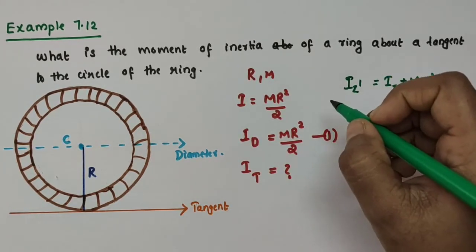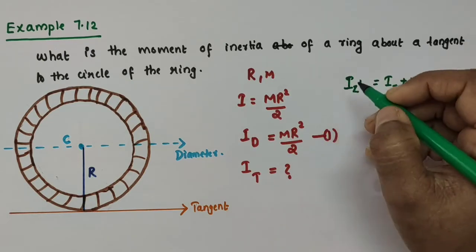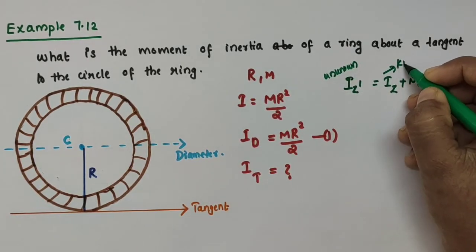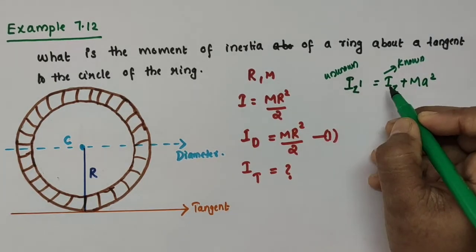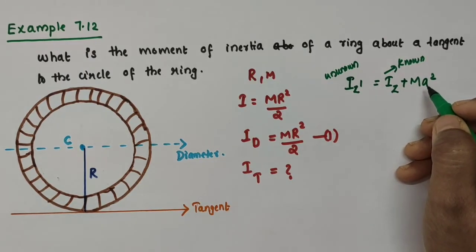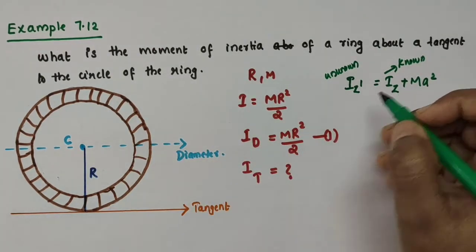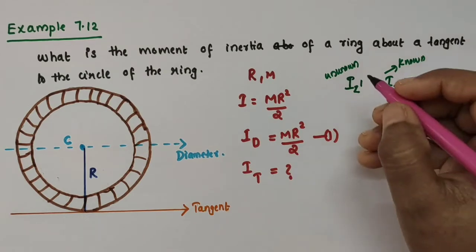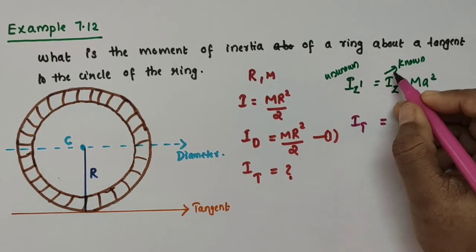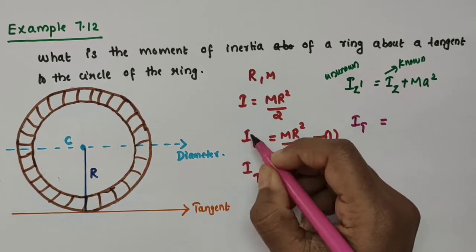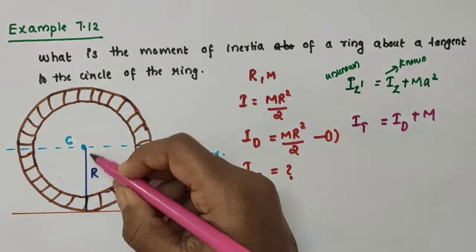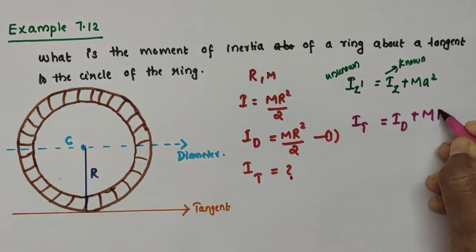Here I_Z' is the moment of inertia about the unknown axis, and I_Z is the known moment of inertia, with the two axes being parallel. M is the total mass of the body, and A is the perpendicular distance between the two parallel axes. So here, I_T = I_D + MR², because the perpendicular distance between the diameter axis and the tangent axis is R.